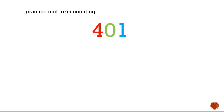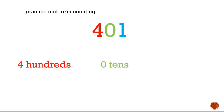How about 401? How are we going to write that out? Go ahead and write that down in unit form. Okay, do you have it written down? Is this what you wrote: 1 four-hundreds, 0 tens, and 1 one?